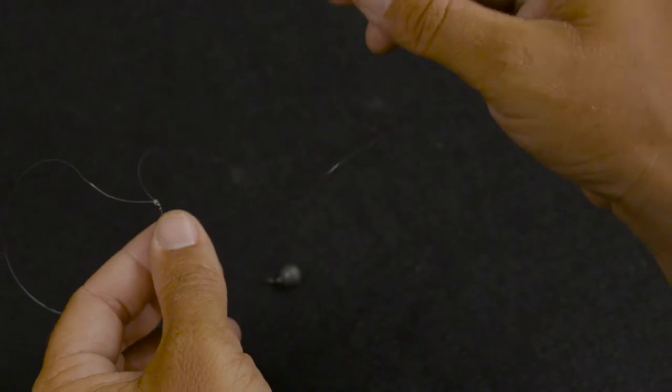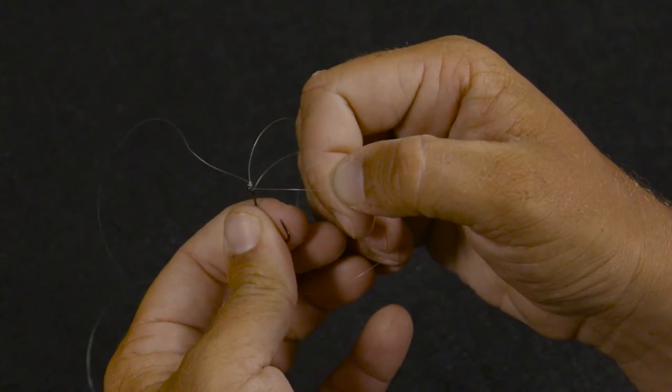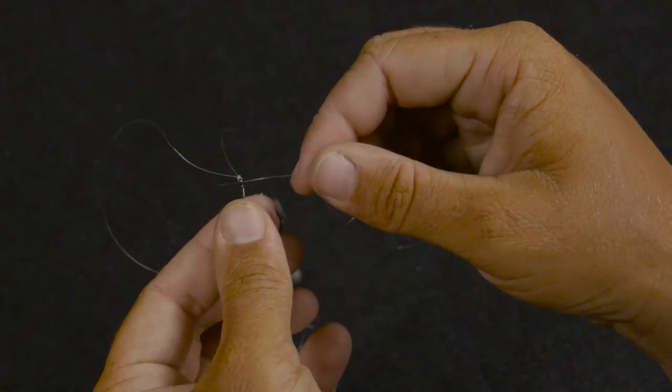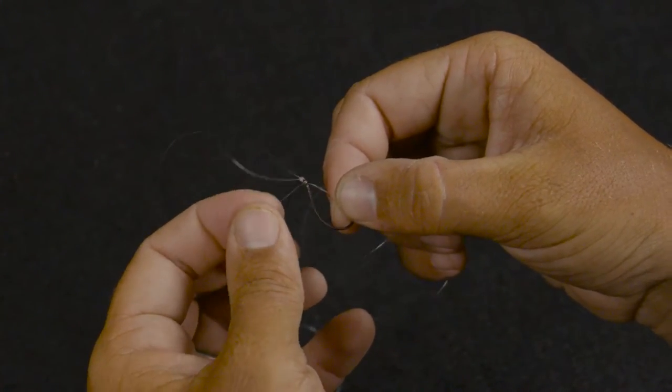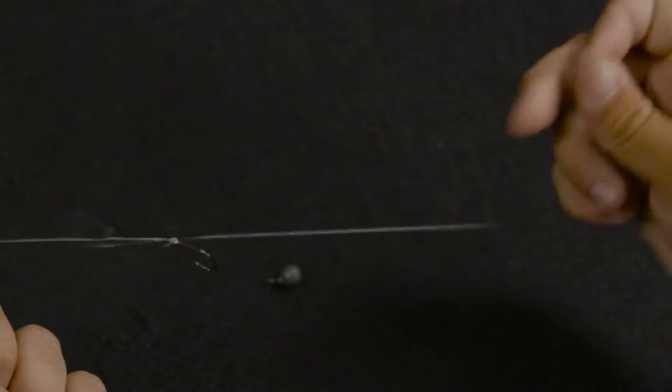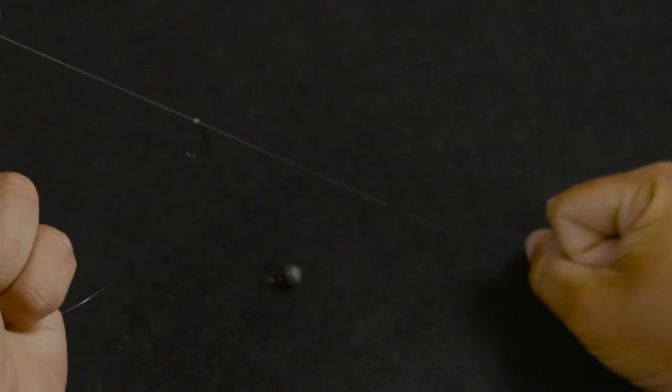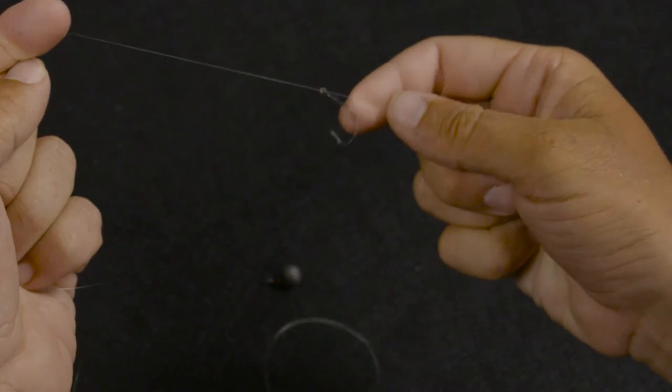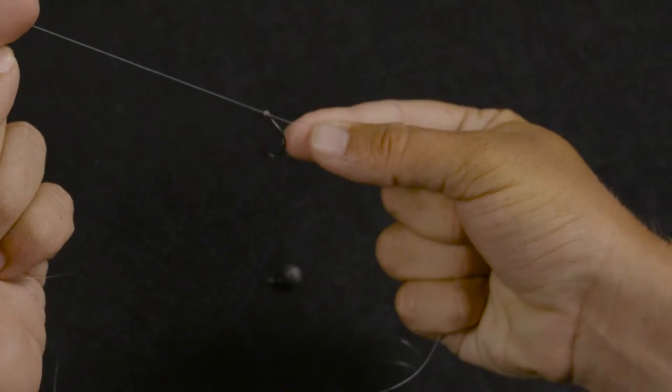Just take that tag end that you're going to connect to your weight, pass it through the eye of the hook, point first, and pull it down tight like this. And voila, your hook is now standing nice and straight up.